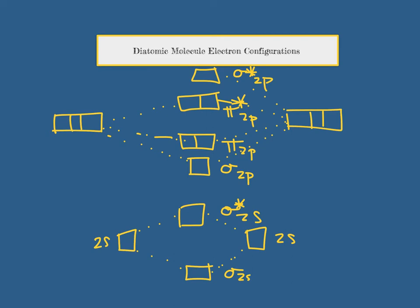Now to fill in the molecular electron configuration for oxygen, we need to consider how many valence electrons oxygen has. Each oxygen has 6 valence electrons for a total of 12 valence electrons available for bonding. So let's fill in the molecular orbitals.